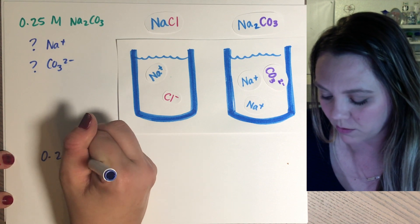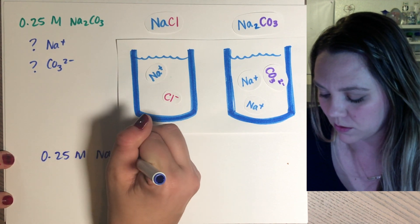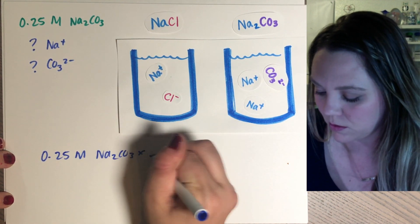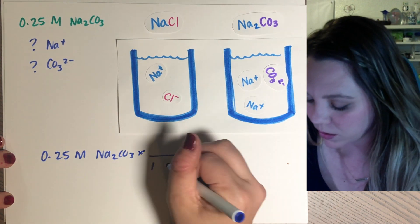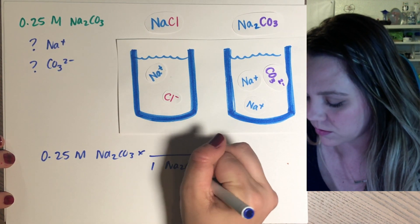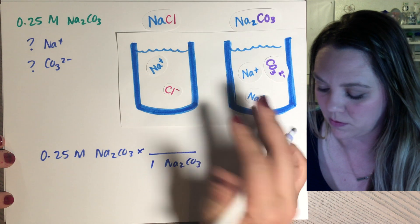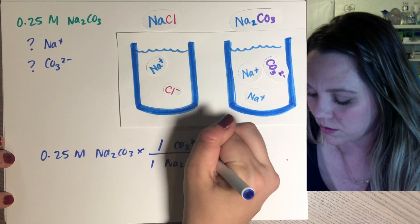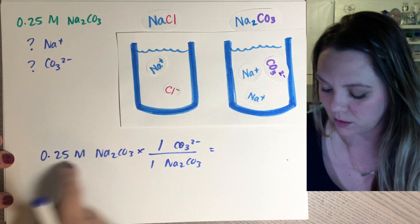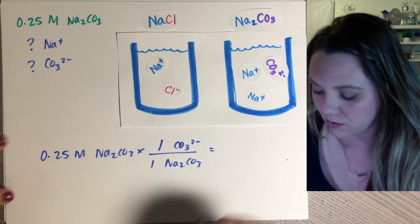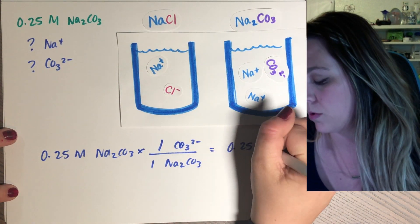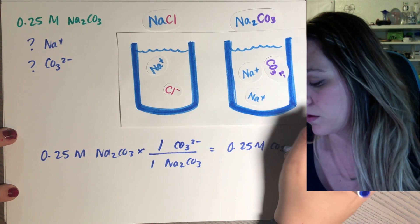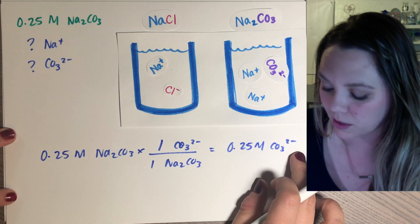Within one molecule of Na2CO3, there's also only one CO3 2- ion. So you're divided by one, multiplied by one, you'd still get 0.25 molar of your carbonate ion.